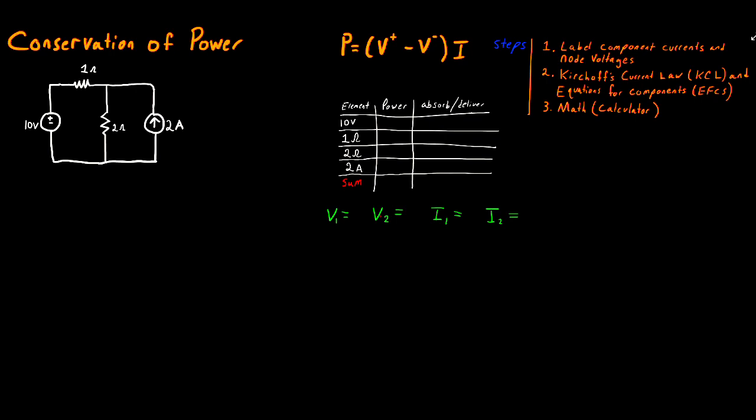I always do my circuit analysis the same way. I begin with labeling my component currents and my node voltages, then move on to writing KCL and the equations for my components. At that point, I'm left with a system of equations that I can either plug into a calculator or solve by hand. So let's jump right into it and begin with labeling my component currents and my node voltages. I need to make sure that every single component within my circuit has a defined current value, whether that's a number or a variable.